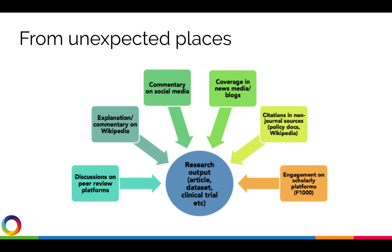Altmetrics can include, but are not limited to, citations on Wikipedia and in policy documents, patent citations, discussions on research blogs, mainstream media coverage, and mentions on social networks such as Twitter. Sourced from the web, Altmetrics can tell you a lot about how often journal articles and other scholarly outputs like datasets are discussed and used around the world beyond just citation counts.